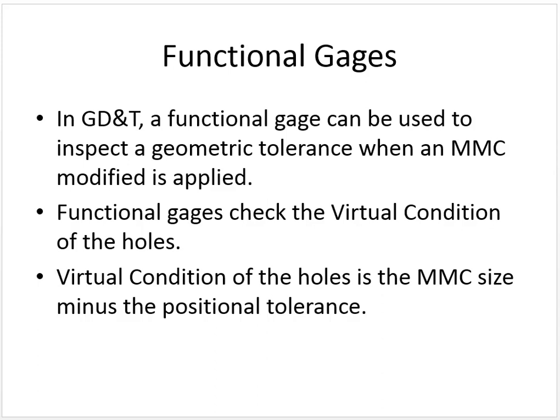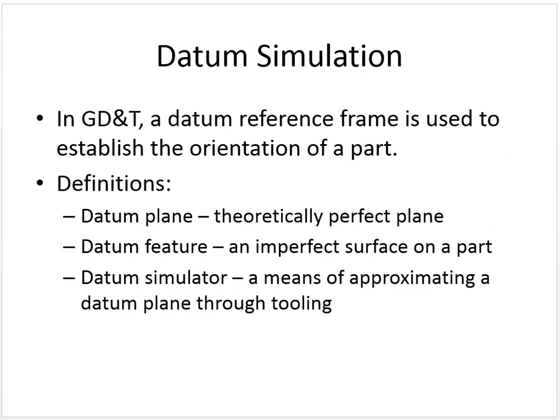In that project sheet I'm talking about a functional gauge that creates a datum simulator, so let me talk about datum simulation a little bit. In GD&T, a datum reference frame is used to establish the orientation of the part. A datum plane is a theoretically perfect plane. A datum feature is an imperfect surface on a part. A datum simulator is a means of approximating a datum plane through tooling — in this case, a surface built into a tool, your functional gauge, that simulates the datum references.